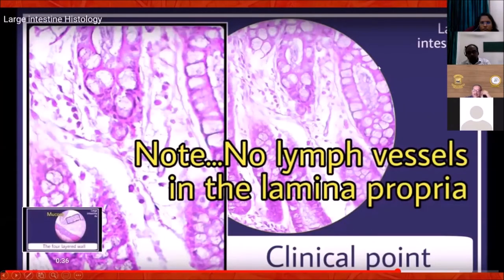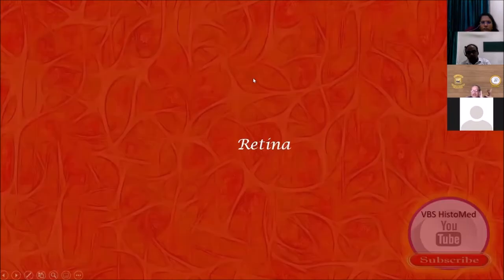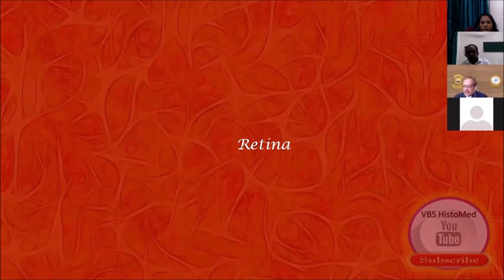Large intestine — I don't have much to say except about the lamina propria. When you compare it with the duodenum, there will be a beautiful beginning of the lymphatic channel, but in the case of the large intestine, there won't be such a channel. This is one of my best slide collections and probably the last, as Dr. Balaji is waiting with the bell and my 40-minute time is getting over.